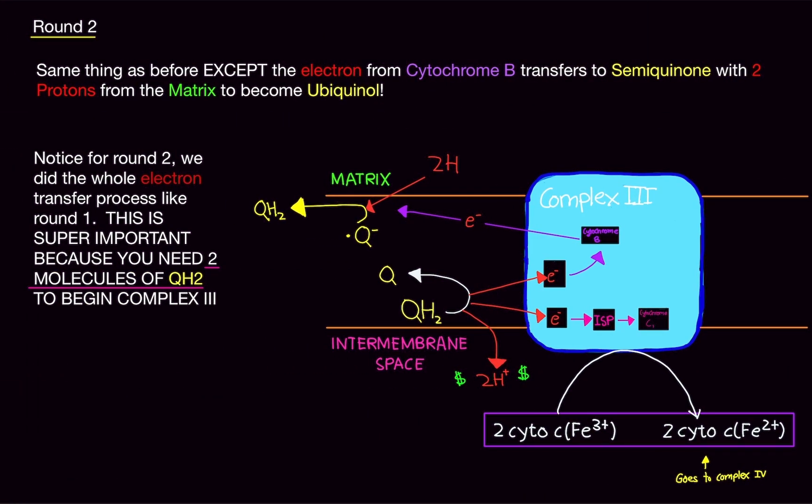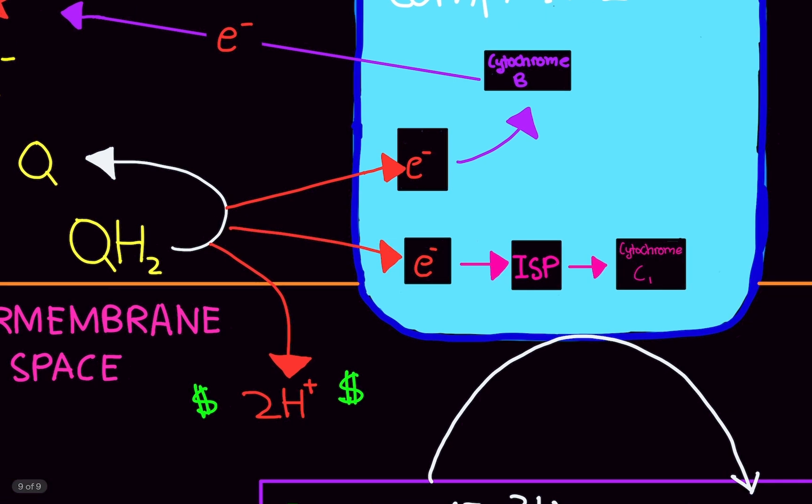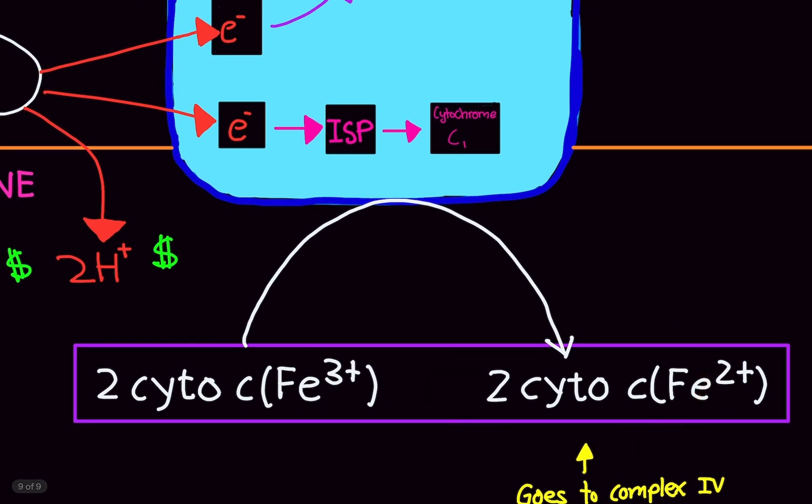Hopefully, this makes sense. So, once again, let me just rephrase if you didn't understand. So, for round two, we're going to take ubiquinol. One electron is going to go to ISP, to cytochrome C1, and then to cytochrome C. This is C1. This is just regular C. This is cytochrome C1. This is just regular cytochrome C.